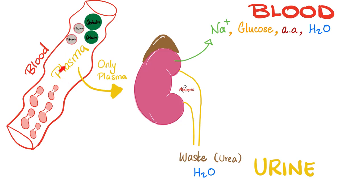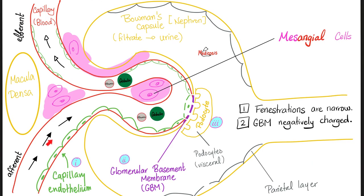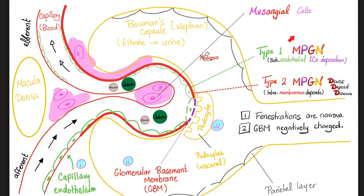Your blood is made of plasma, which has plasma proteins, and red blood cells. Normally your kidney should not lose plasma proteins or red blood cells in the urine. But when the kidney loses lots of proteins in the urine — nephrotic syndrome. If your kidney loses blood — nephritic. Here's the mesangial cell: meso means middle, angio means vessel, it's in the middle of vessels. Here's the endothelium, the glomerular basement membrane, and the epithelium or podocyte. This slide shows what happens in membranoproliferative glomerulonephritis.